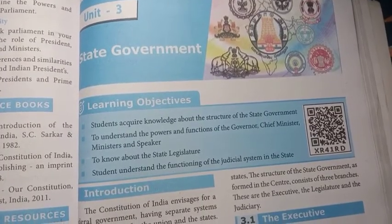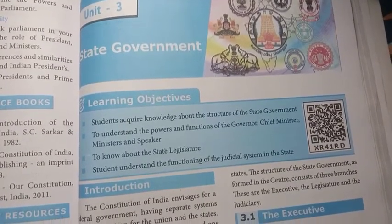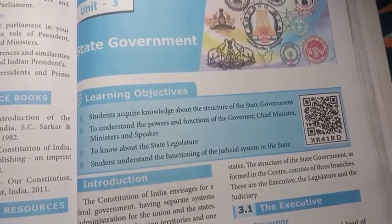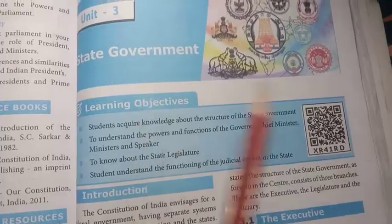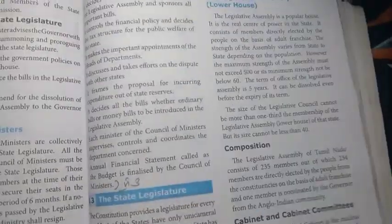In this video, we will look at the 10th standard Social Science Civics Unit 3 – State Government lesson order book back exercise, page number 267.